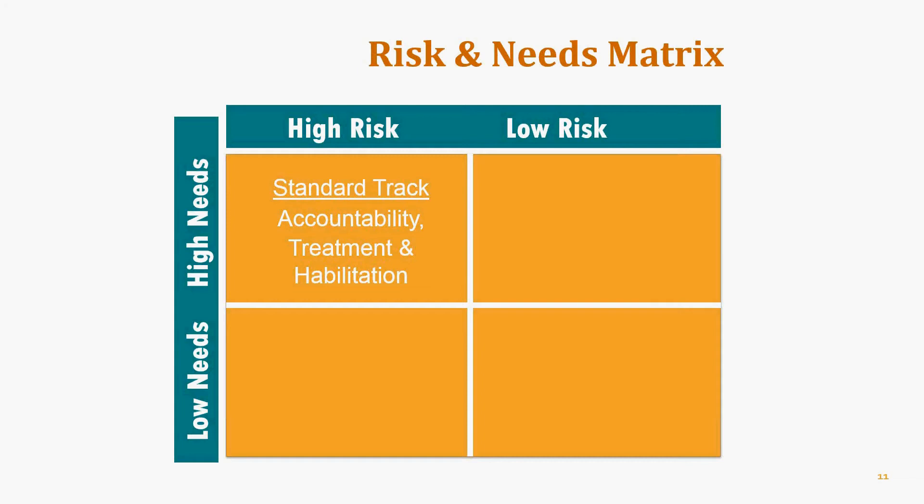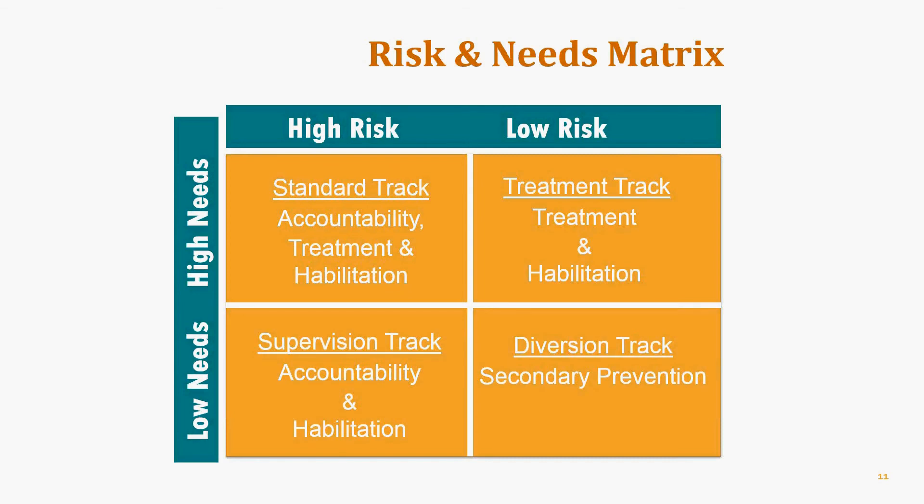The lower left quadrant — high risk but low needs — may be antisocial with prior treatment failures and family histories, but are not addicted or seriously mentally ill. Those individuals could be in a supervision-oriented track focusing on monitoring, accountability, consequences, job training, and literacy, but they do not need substance abuse treatment — giving treatment to people who don't need it makes them worse. The lower right quadrant — low risk and low need — should be in a diversion track to exit the justice system quickly, with some psychoeducation and negative contingencies.